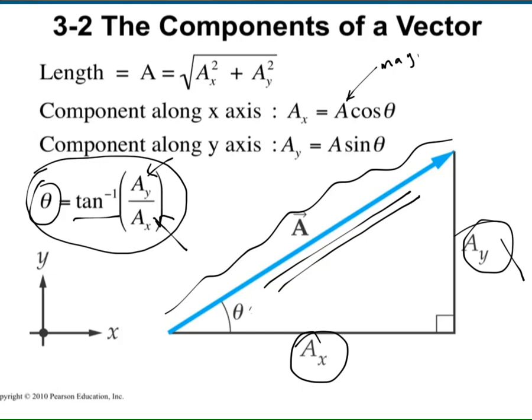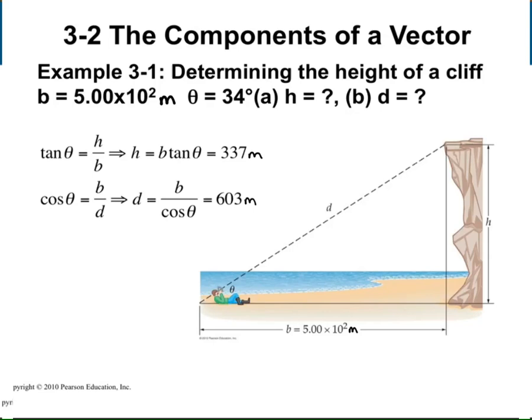The x-component is the hypotenuse times cosine of angle theta. The angle can be recovered using the inverse tangent. There are two ways to write this down. These transformations allow you to convert between the side lengths of the triangle and the angle and length.